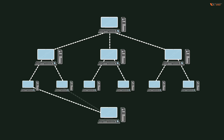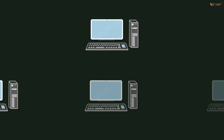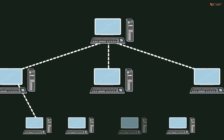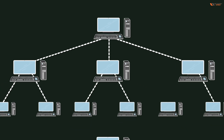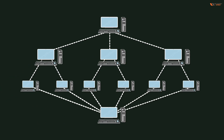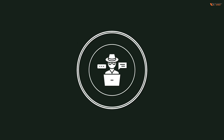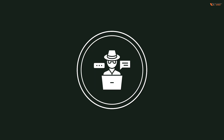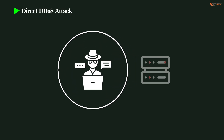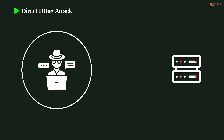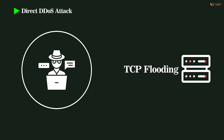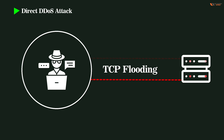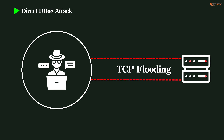The first type of DDoS attack is a direct DDoS attack. Direct denial of service attacks occur when the source of the attack generates packets — regardless of the protocol, application, or subnet — and sends the attack vector directly to the victim. For example, a single attacker sitting in one subnet sends TCP flooding directly to a victim server. As you can see, this is a direct connection between the attacker and the victim, and this type of attack is known as a direct DDoS attack.